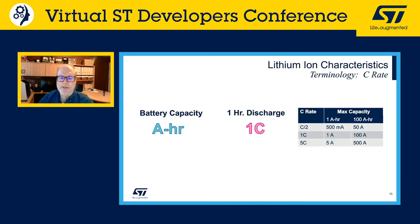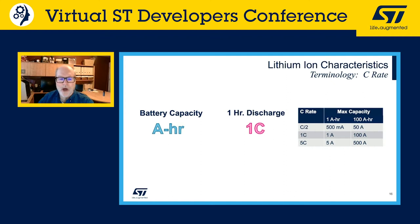In describing batteries, current is often expressed as a C rate to normalize against battery capacity. A C rate measures the rate at which the battery is discharged relative to its maximum capacity: a 1C rate discharges the entire battery in one hour. For a 100 amp-hour battery, this equates to 100 amps; a 5C rate would be 500 amps; and a C/2 rate would be 50 amps. Similarly, an E rate describes discharge power — a 1E rate is the power to discharge the entire battery in one hour.